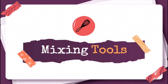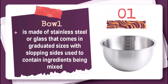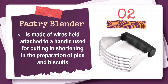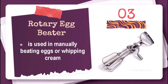Mixing tools. Bowl is made of stainless steel or glass that comes in graduated sizes with sloping sides, used to contain ingredients being mixed. Pastry blender is made of wires attached to a handle, used for cutting in shortening in the preparation of pies and biscuits. Rotary egg beater is used in manually beating eggs or whipping cream.